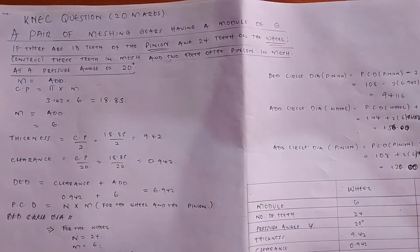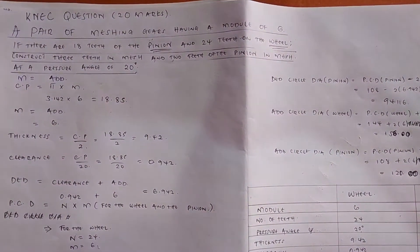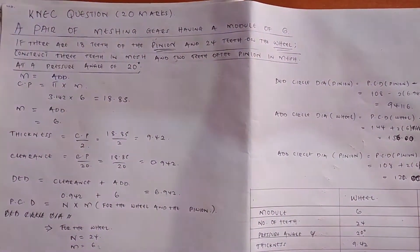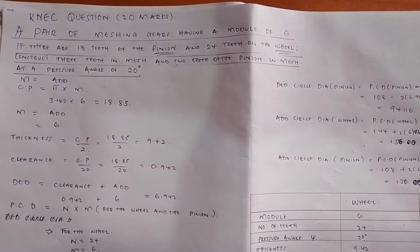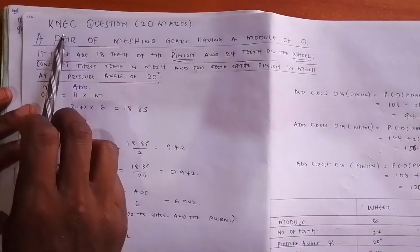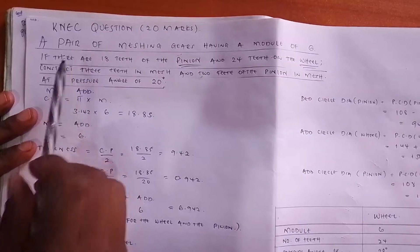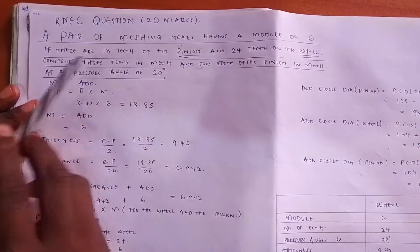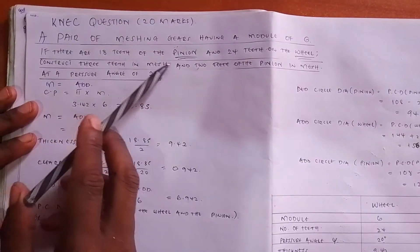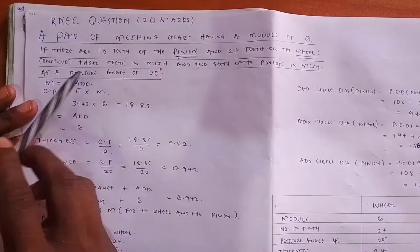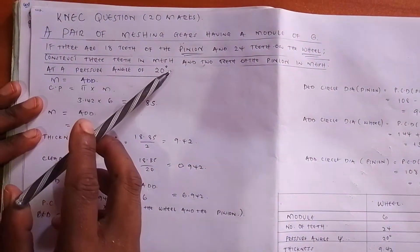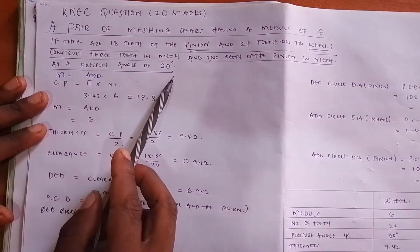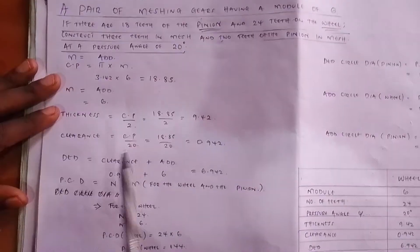Now I want to show you how to actually put these things into a machine question and how to apply these formulas in an instance when a question is given to you. I have a NECA question paper which is 20 marks, and the question asks: a pair of machine gears having a module of 6, if there are 18 teeth on the pinion and 24 teeth on the wheel, construct 3 teeth in mesh and 2 teeth of the pinion in mesh at a pressure angle of 20 degrees.